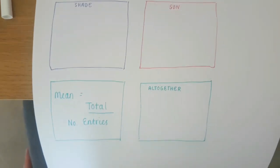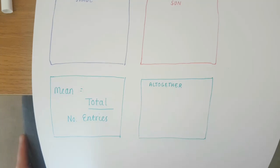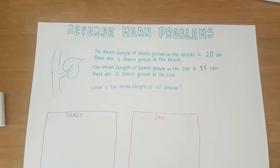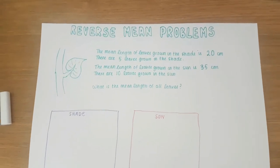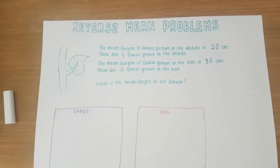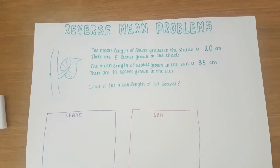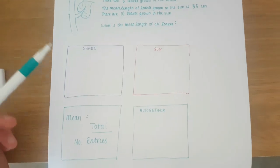The mean is the total divided by the number of entries. Unfortunately we don't know the total in the shade or in the sun so we're going to need to work backwards to find this out. Let's start with that in the shade.